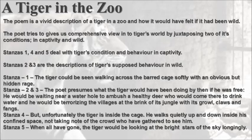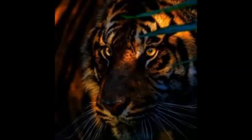Stanza 4 describes the unfortunate condition of the tiger inside the cage — he walks quietly up and down in his confined space, not taking note of the crowd gathered to see him. In stanza 5, when all have gone, the tiger looks longingly at the bright stars of the sky. I hope you enjoyed reading this poem. Happy learning!